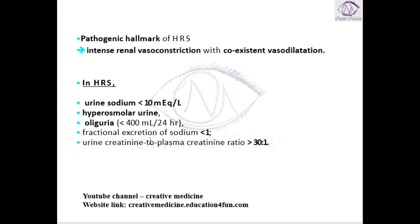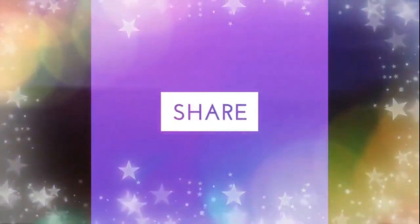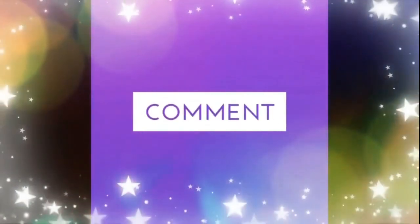These are the features in the urine in hepatorenal syndrome: urine sodium less than 10 mEq per litre, hyperosmolar urine, oliguria less than 400 ml per 24 hours, fractional excretion of sodium less than 1, and urine creatinine to plasma creatinine ratio more than 30 to 1. Thank you for watching.